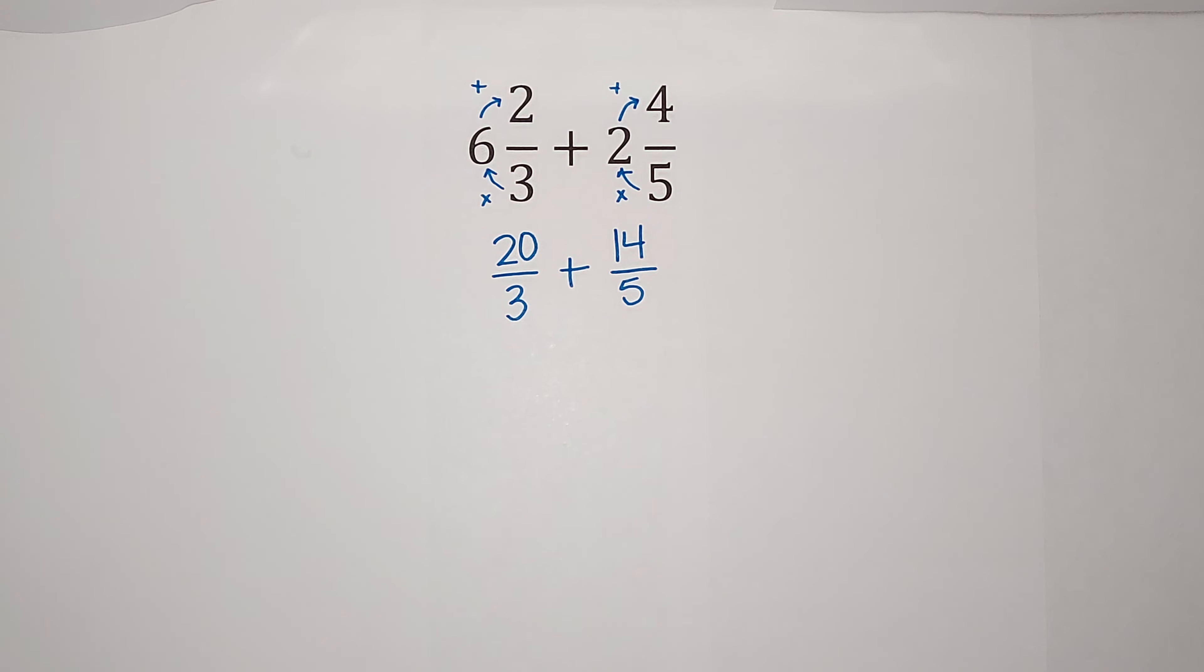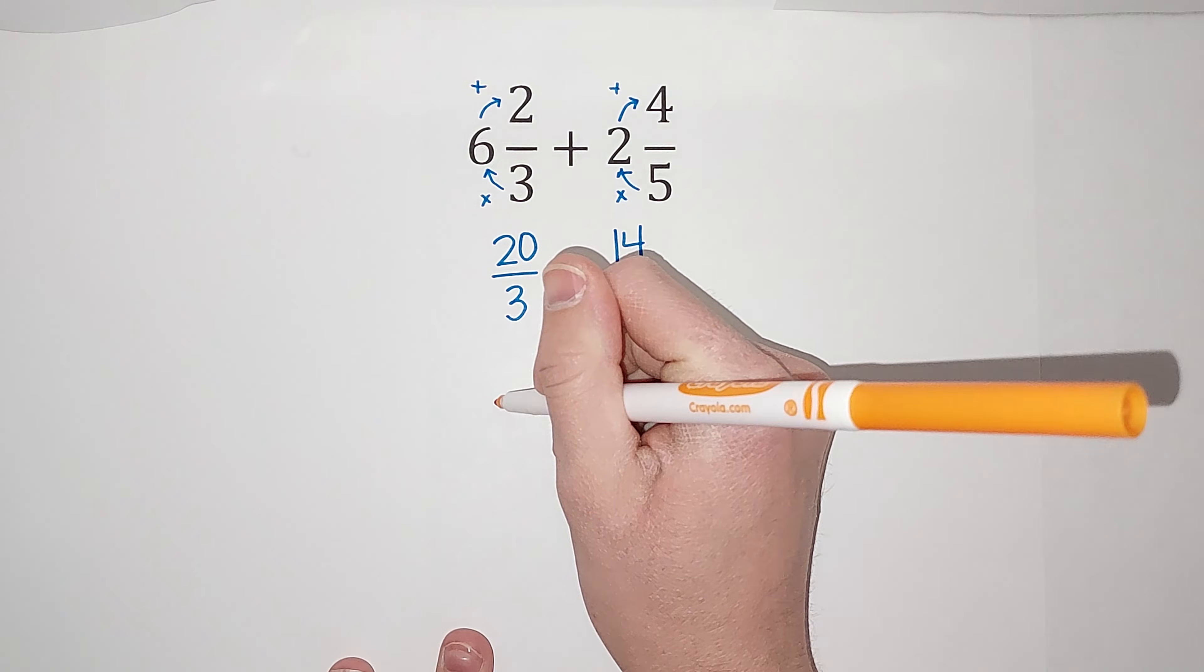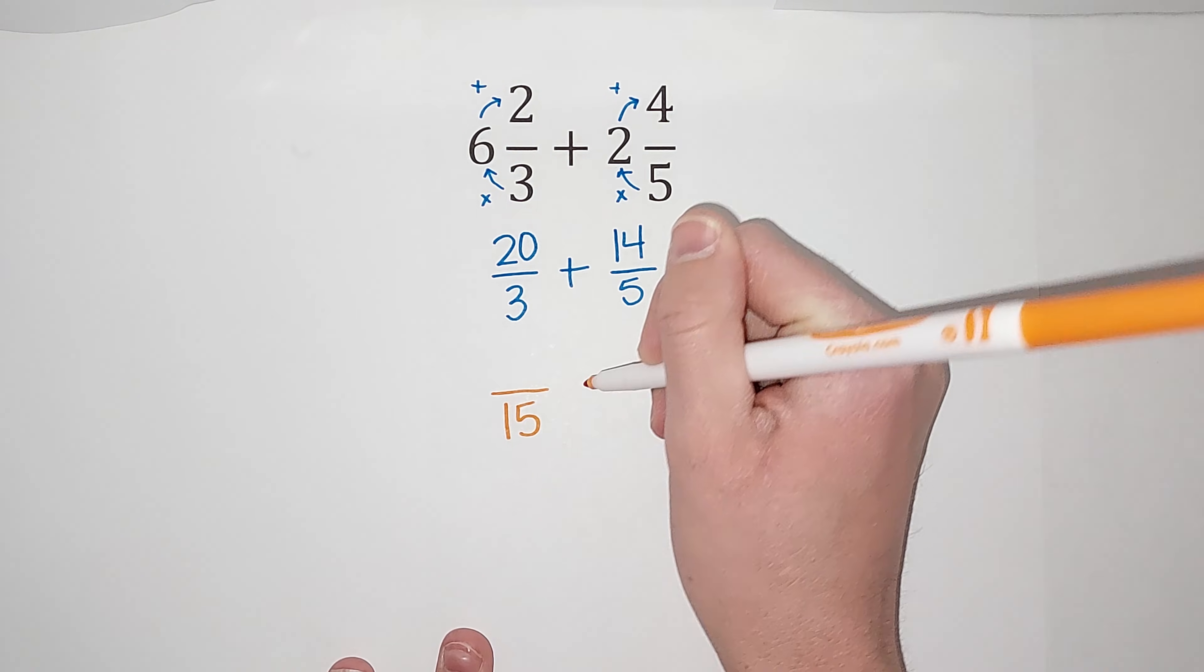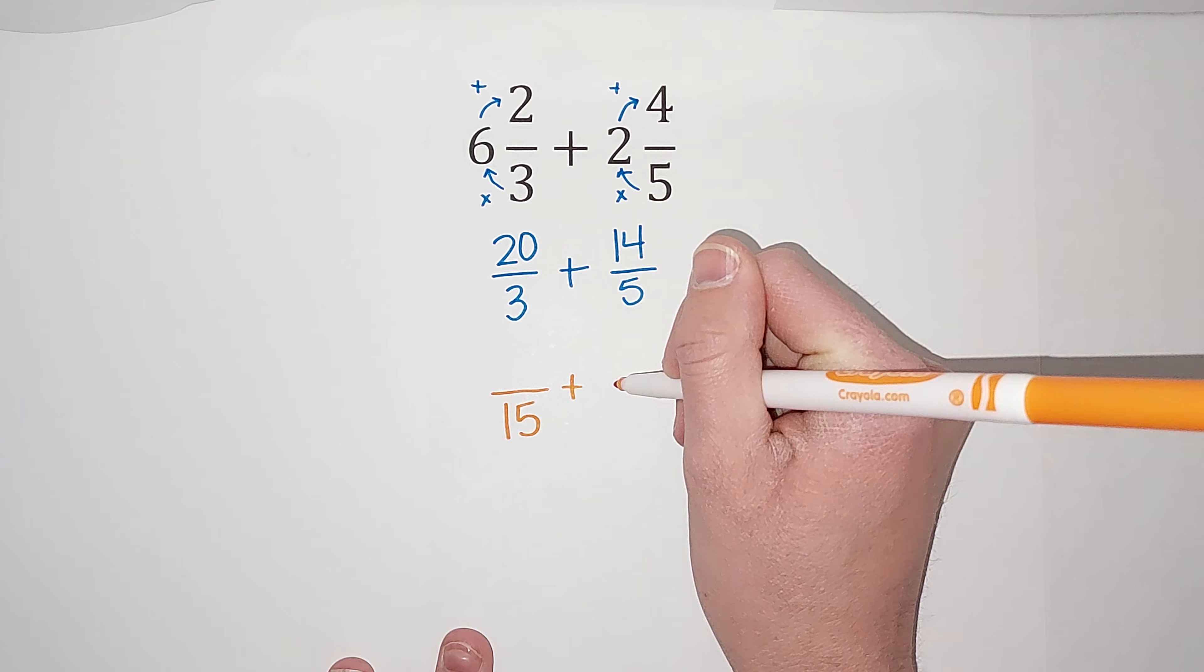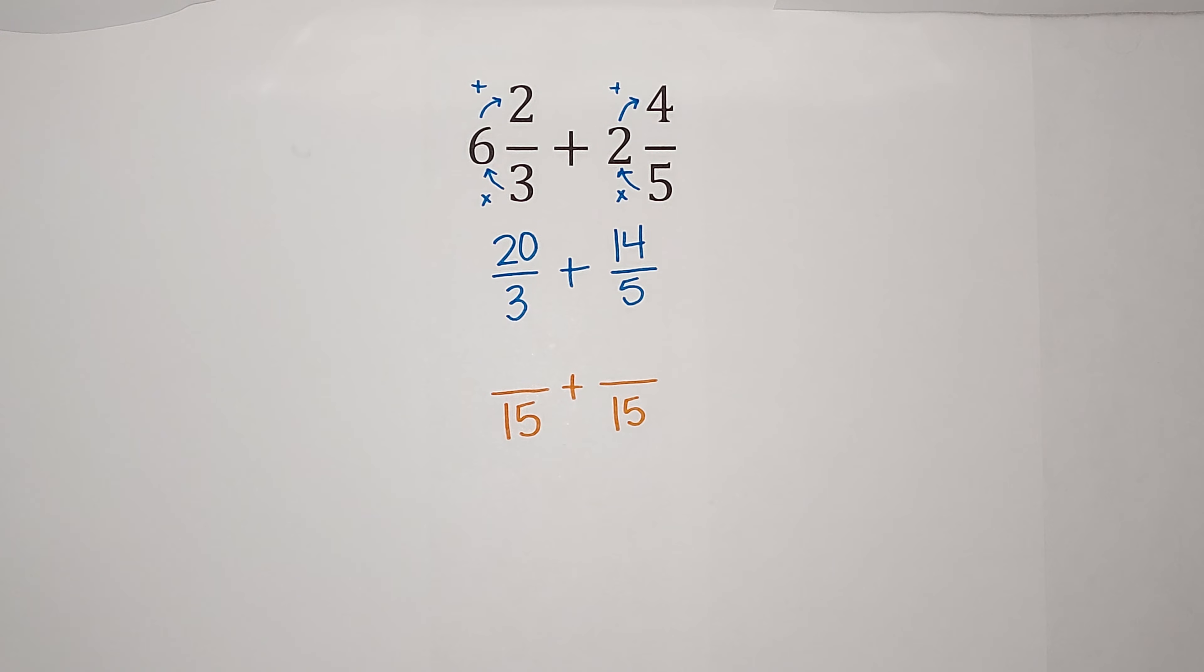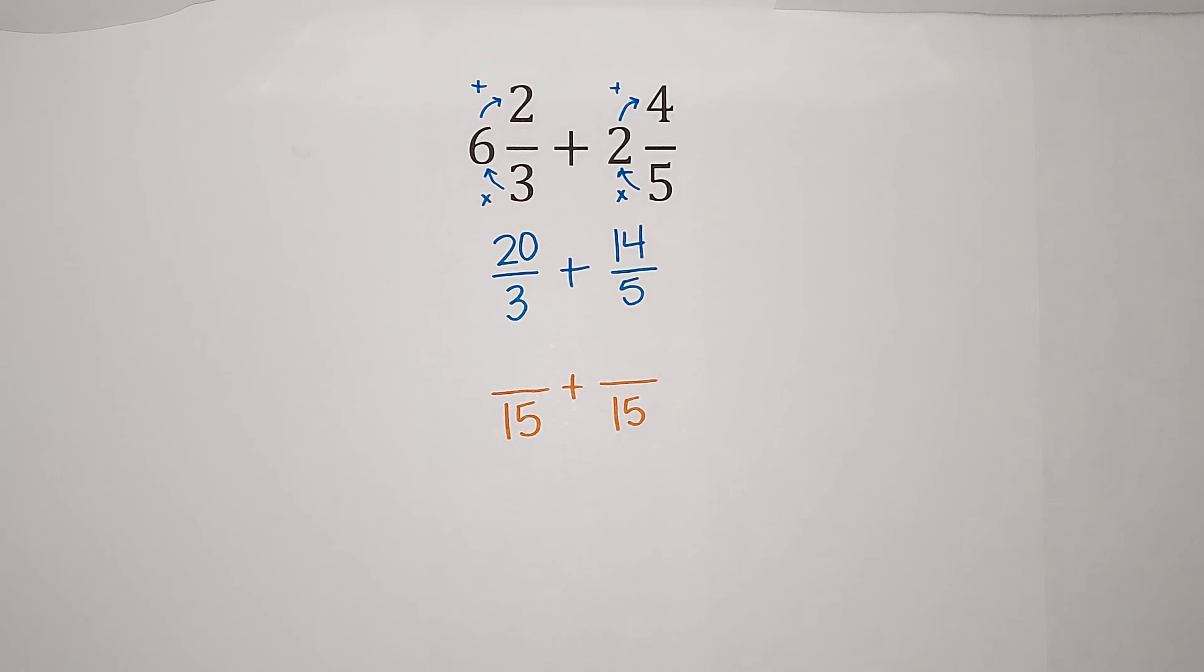So let me show you what my goal is here. I want to have a fraction that is equal to 20 thirds but has a denominator of 15, and a fraction that is equal to 14 fifths but has a denominator of 15. That is my goal. So we know what we want the denominator to be. We got to figure out what the numerator is.